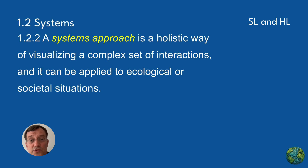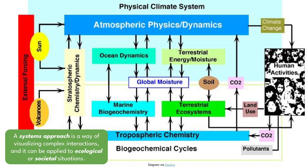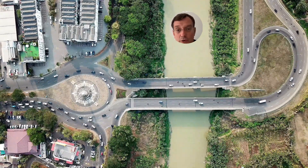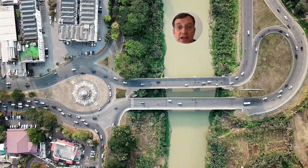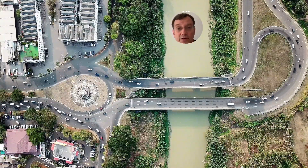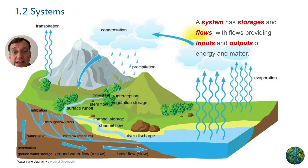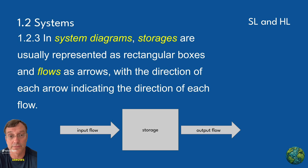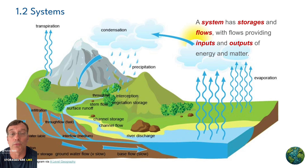A systems approach helps us visualize these intricate interactions in both ecological and societal contexts. It's like looking at a city from above — you see how roads, buildings, parks, and people all work together. This holistic view is crucial in understanding environmental systems. In system diagrams, we represent storages as rectangular boxes and flows as arrows.